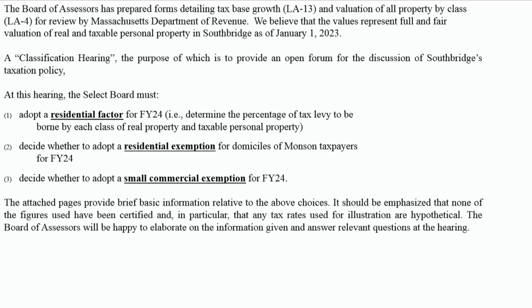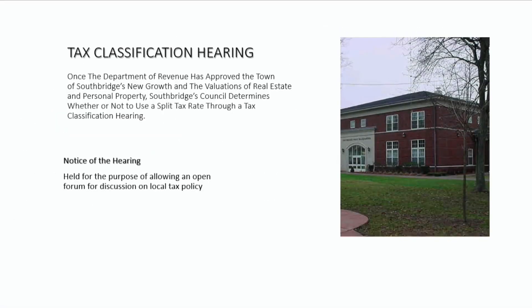The small commercial exemption is 10% that you can actually shift within the commercial itself only. That will give any commercial property that's under $1 million and has 10 employees or less a benefit of 10% in savings on their taxes. It's important to understand that it applies to the actual real estate and not to the property owner — the owner would actually get the benefit, not the business, if the business is renting. There is another option for open space, which we do not have in this community, so there is no decision to make there.